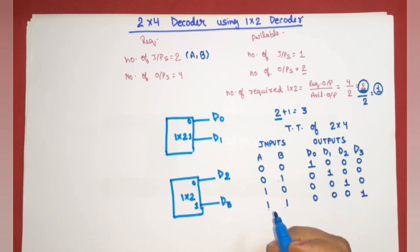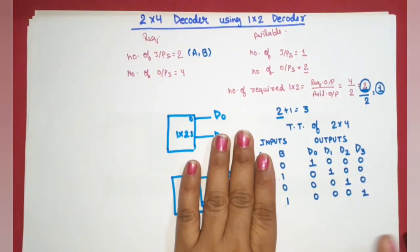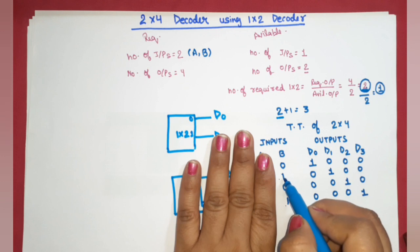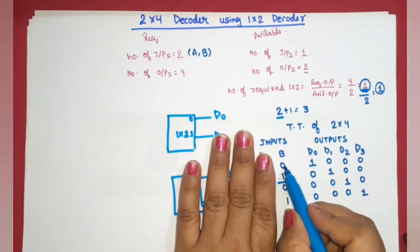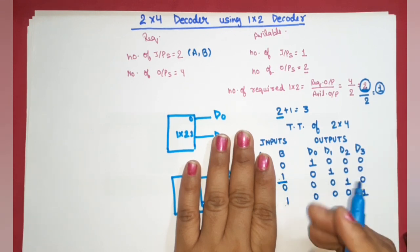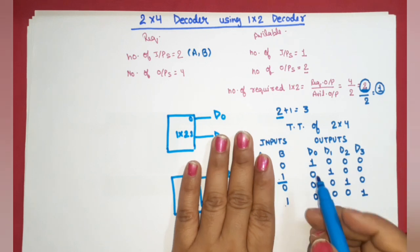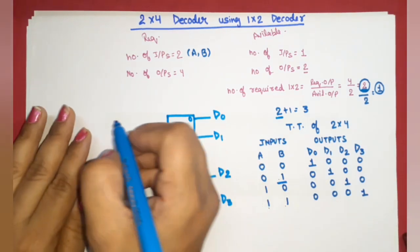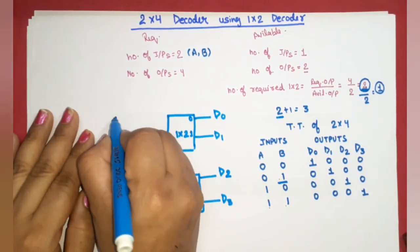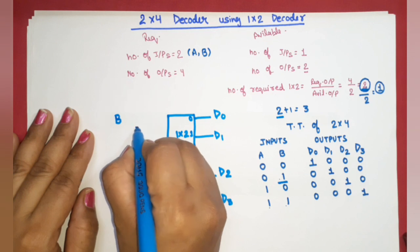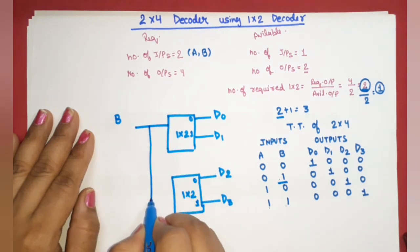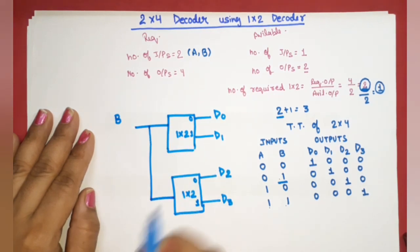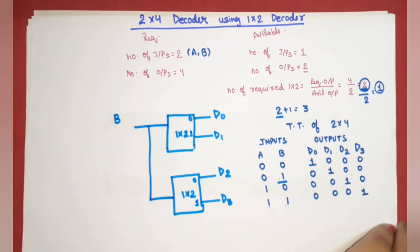Now looking at the input side: if we examine input A, we can see that B has the pattern 0, 1, 0, 1 — common values repeating. So input B is applied as input to both the first and second one-to-two decoder.